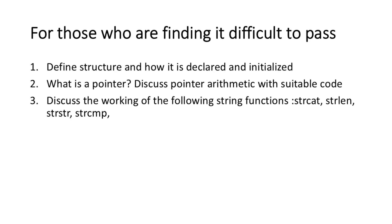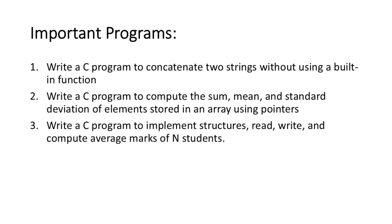For those who are finding it difficult to pass, focus on these key questions from Module 5. These will 100% help you pass: Define structure and how it is declared and initialized. What is a pointer — discuss pointer arithmetic with suitable code. Discuss the working of the string functions strcat, strlen, strstr, and strcmp. Important Programs: Write a C program to concatenate two strings without using a built-in function. Write a C program to compute the sum, mean, and standard deviation of elements stored in an array using pointers. Write a C program to implement structures — read, write, and compute average marks of N students.